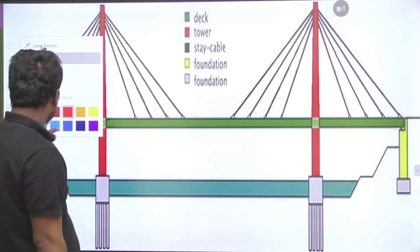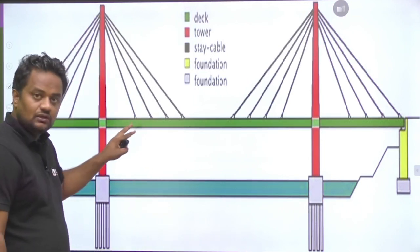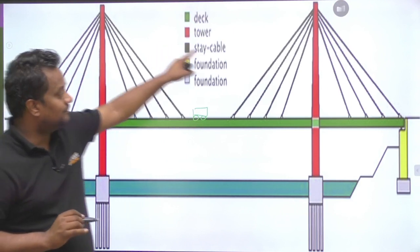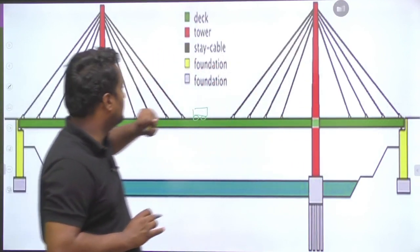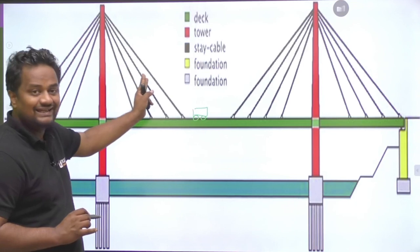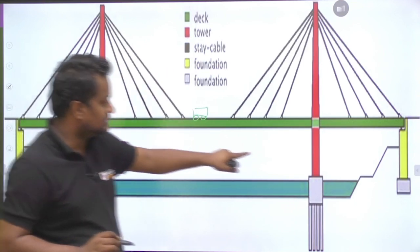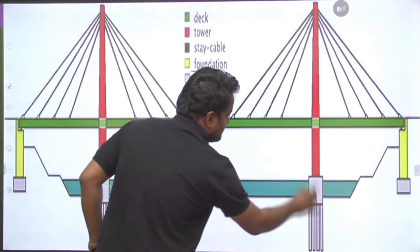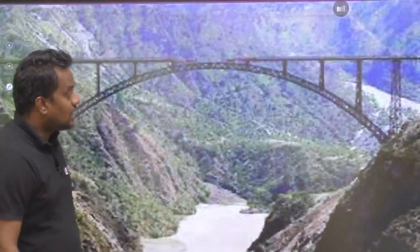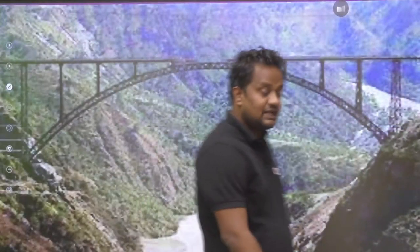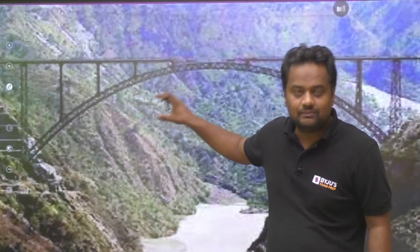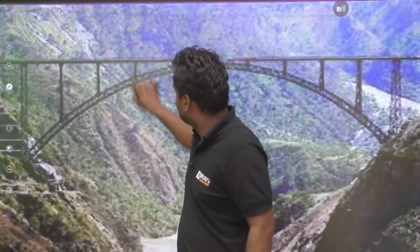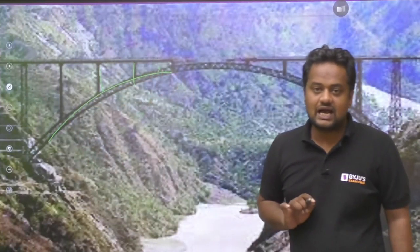This is the deck — the green part where the traffic will be moving. The red one is the pylon, also called the tower. These are the stay cables — high-tension-carrying wires. The yellow ones are the foundations. There is a foundation for the pylon separately. Now, you might know the Chenab Bridge — that is the tallest rail bridge in the country. That is a cable suspension bridge, where the cables are not connected to a rigid element but to an arch structure.